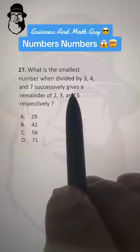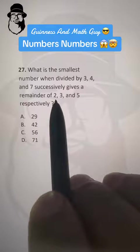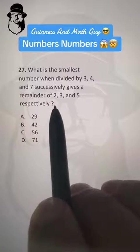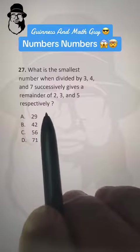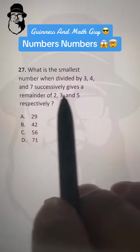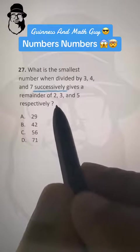What is the smallest number when divided by 3, 4 and 7 successively gives a remainder of 2, 3 and 5 respectively? Now this is a little confusing. Let me tell you what successively in this question means.